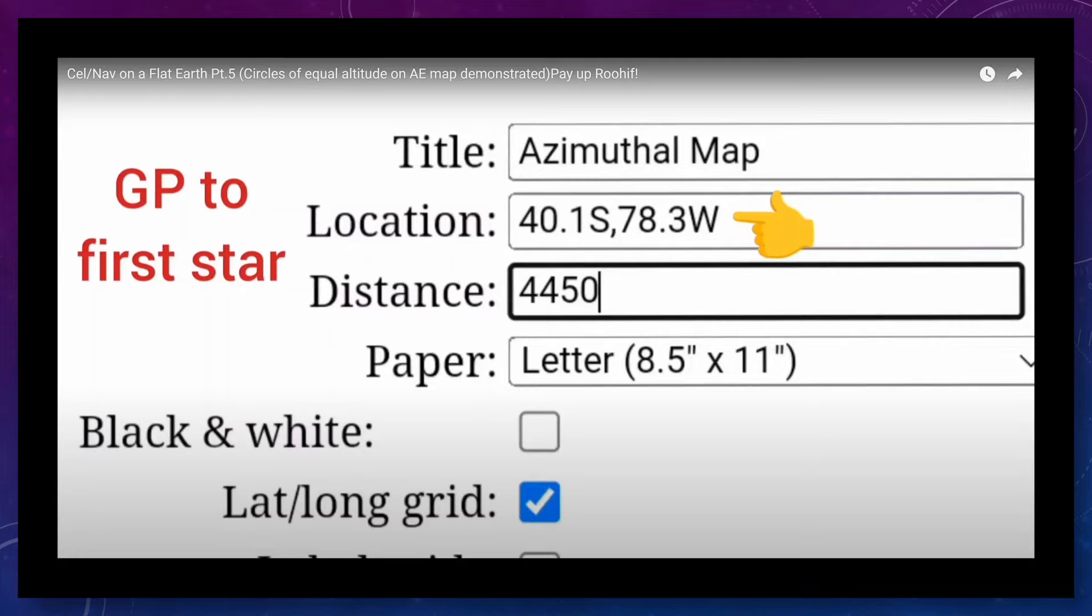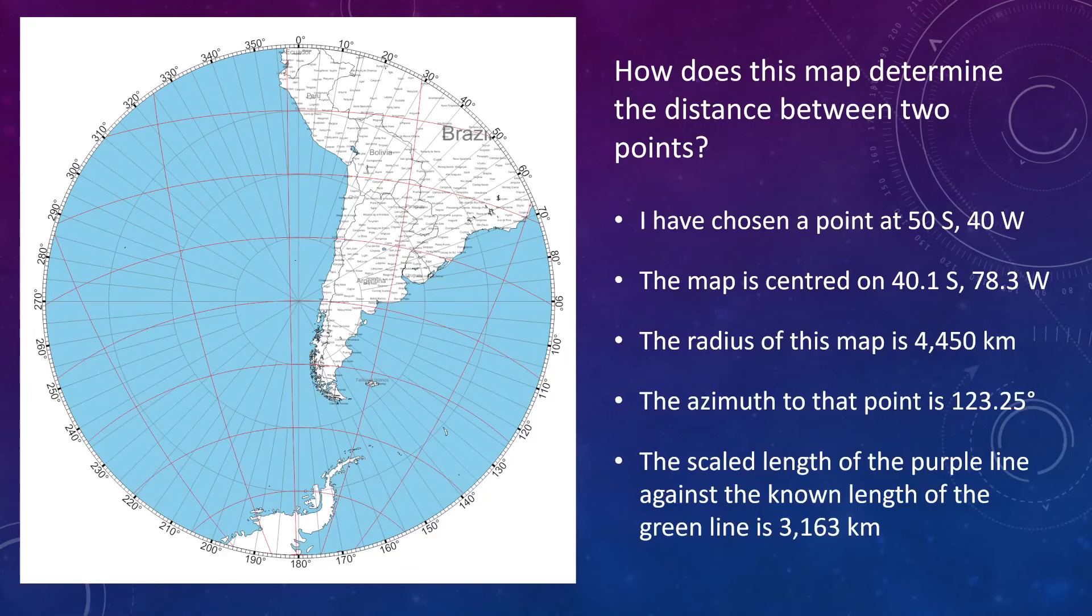Okay, so now we know how to work out these coordinates. Let's apply that to Brian's azimuth projections that he used in his video. So for his first projection, he chose a GP of 40.1 south, 78.3 degrees west. And the radius of that circle of equal altitude was 4,450 kilometers. So here's that map. And what we're going to do is choose a point on this map with a known latitude and longitude, and then see if we can figure out what formula it's using. And I've chosen a point where lines of latitude and longitude cross just to make it easier. And that point that I've chosen is 50 degrees south, 40 degrees west, which is just northwest of South Georgia Island.